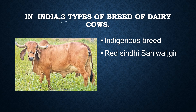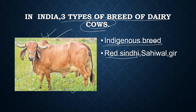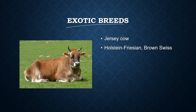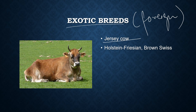In India, there are three types of dairy cow breeds. The first is indigenous breeds, which include Red Sindhi, Sahiwal, and Gir. The second is exotic breeds — these are foreign breeds — including the Jersey cow, Holstein Friesian, and Brown Swiss.